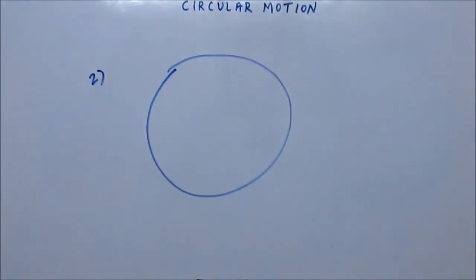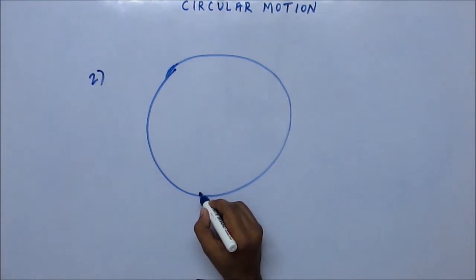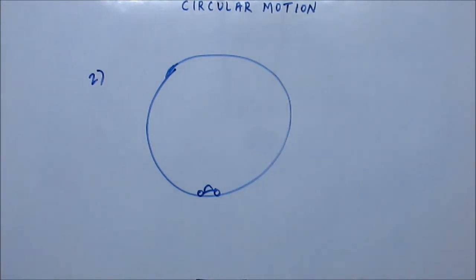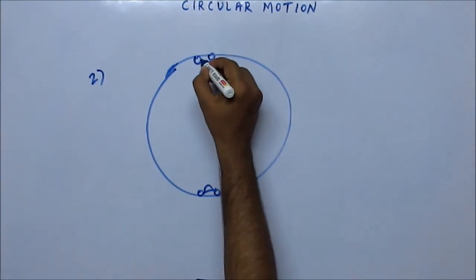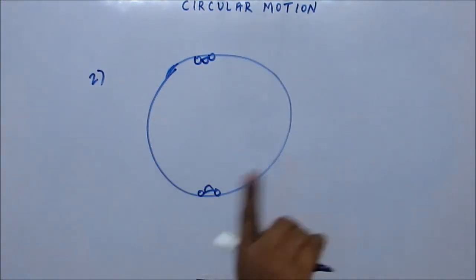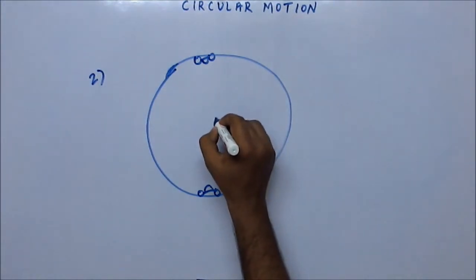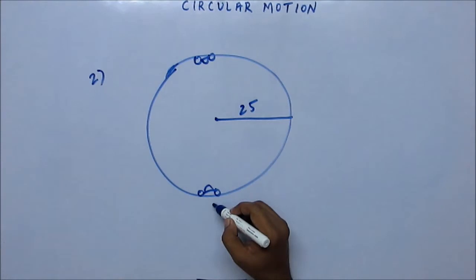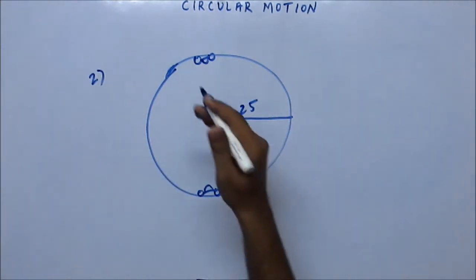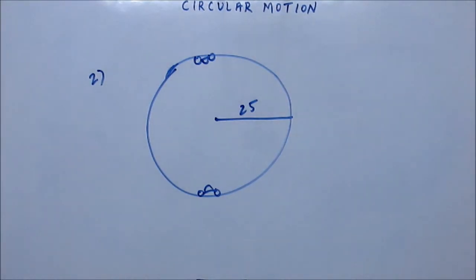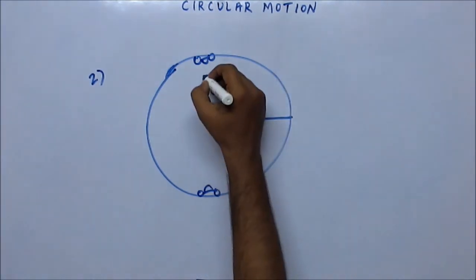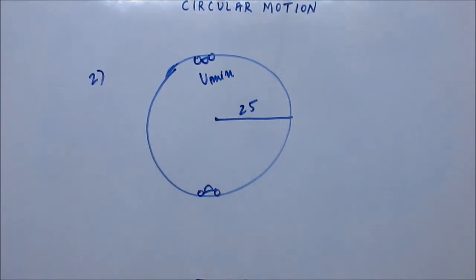Next problem: consider a vertical circle — a death well as seen in a circus — where a biker rides from the bottom to the top of the vertical circle and doesn't fall at the top. The radius of this death well is given as 25 meters. Find the minimum velocity at the bottom the rider should have so that he doesn't fall when he reaches the top, and also find the minimum velocity required at the top.